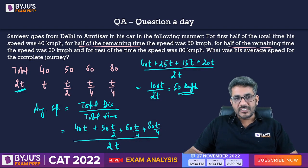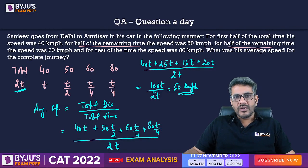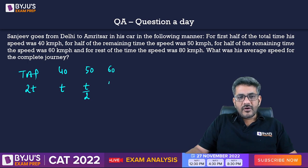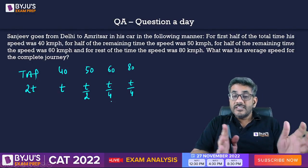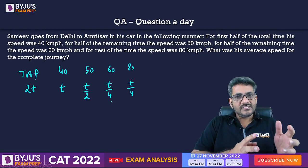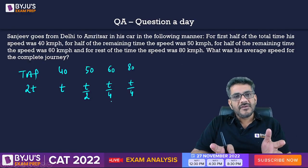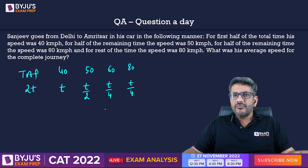That's the normal way of solving this question, but I want to discuss a better, more logical method. I'll erase all of this and show you. Total time is 2t: speed was 40 for first t minutes, 50 for next t/2 minutes, 60 for next t/4 minutes, and 80 for the remaining t/4 minutes. We know that average speed equals the average of the speeds only if the time taken for each is equal. Here the times are different, but with a little logic we can make this easy.